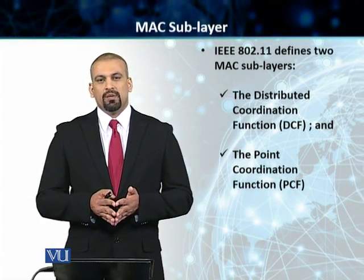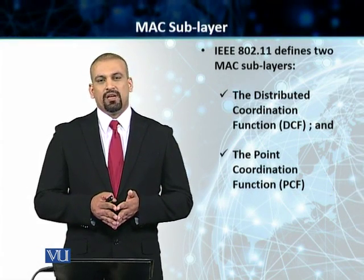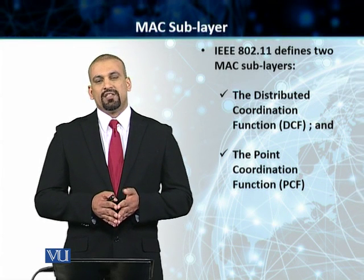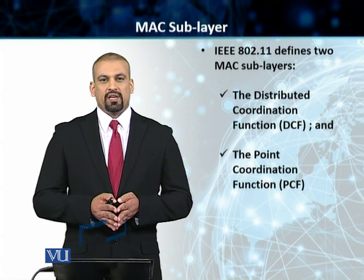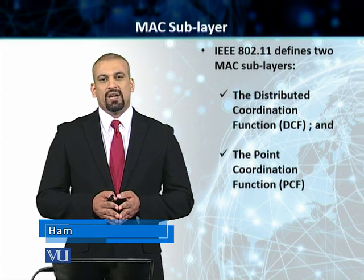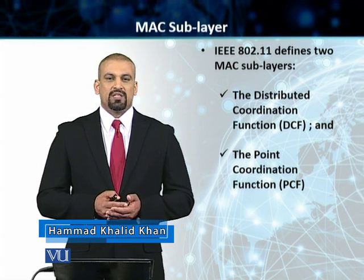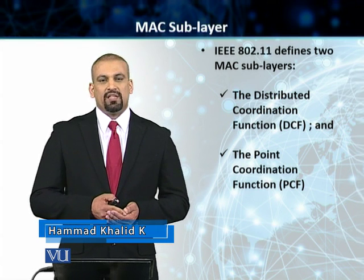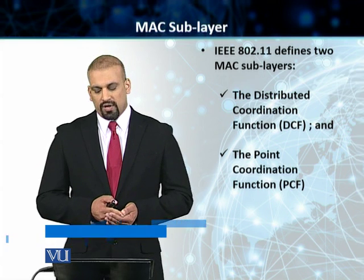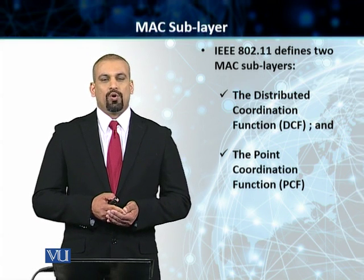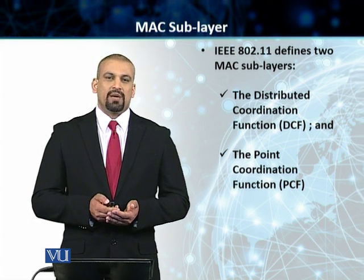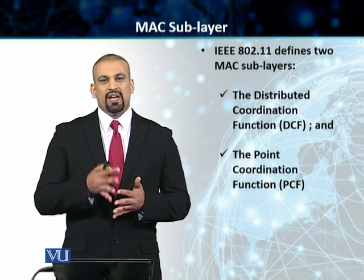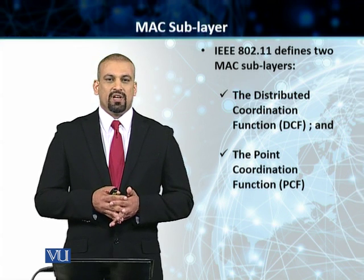We will talk about the MAC sublayers in the IEEE 802.11 standard. The standard defines two MAC sublayers in the case of wireless LANs. The first MAC sublayer is called the Distributed Coordination Function or the DCF, and the second one is called the Point Coordination Function or the PCF. I will show you how these two MAC sublayers interact with each other, with the link layer, and with the physical layer.